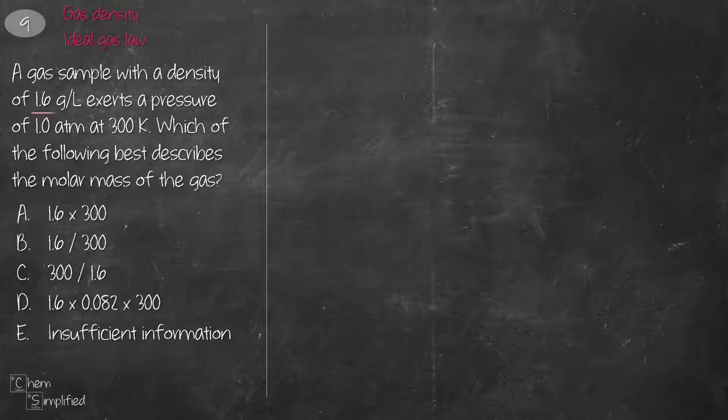This next question is on gas density and ideal gas law. We're given a density of 1.6 grams per liter, and then we're told that it has a pressure of 1 atm and 300 Kelvin. This time the temperature is given in Kelvin, no conversion needed. We need to figure out the molar mass of the gas.